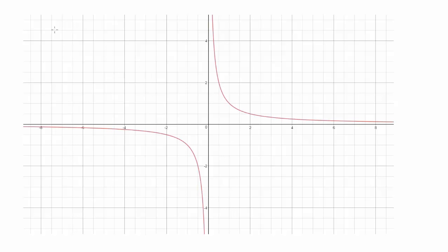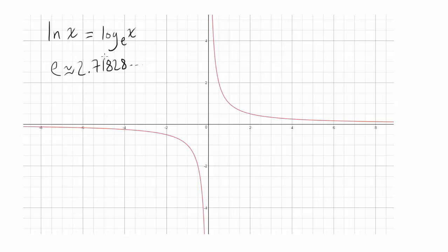In your algebra class, you have all learned what natural log of x is. This is the same thing as log base e of x, where e is a transcendental number which is about 2.718281828 and goes on forever. Your algebra teacher said to treat natural log as any other log because its definition is log base e of x. In this video, we are going to take a more calculus approach and come up with another definition for natural log of x.